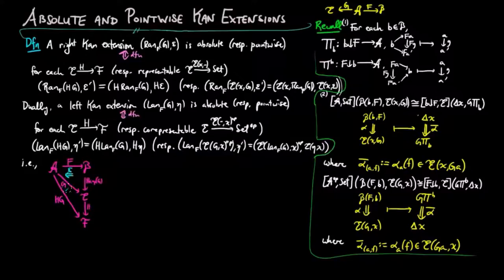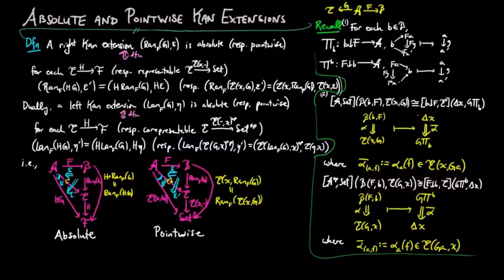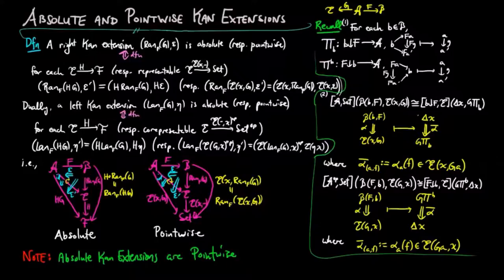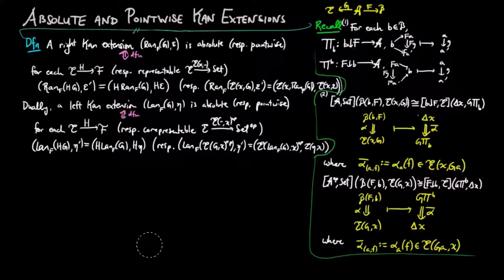Diagrammatically, we have the absolute Kan extension and point-wise Kan extension as given here. Note that by definition, absolute Kan extensions are point-wise Kan extensions. It turns out point-wise right Kan extensions can be computed as certain limits, and left point-wise Kan extensions can be computed as certain co-limits.